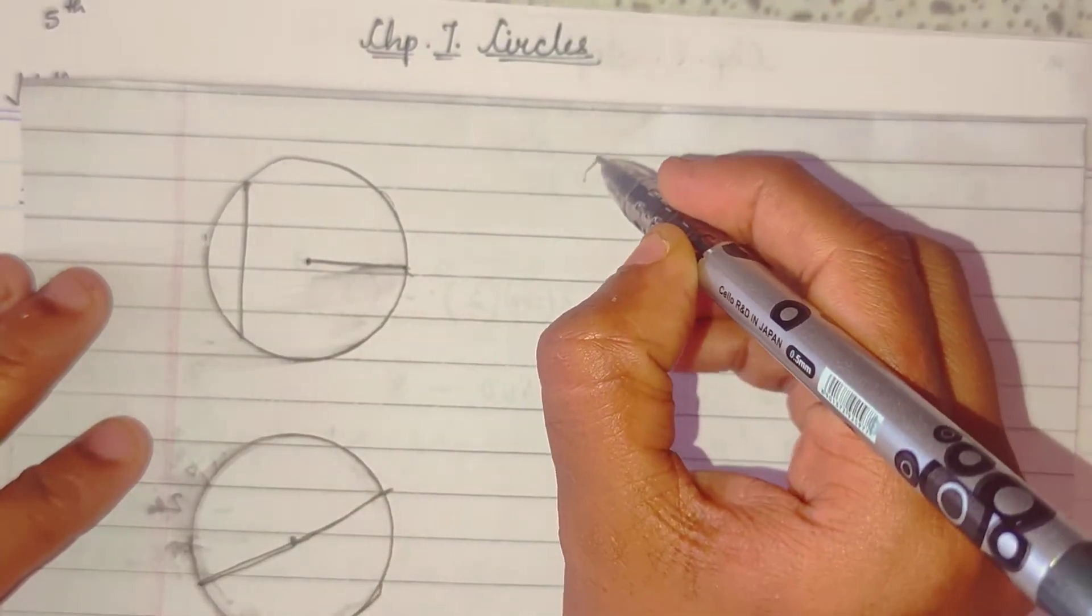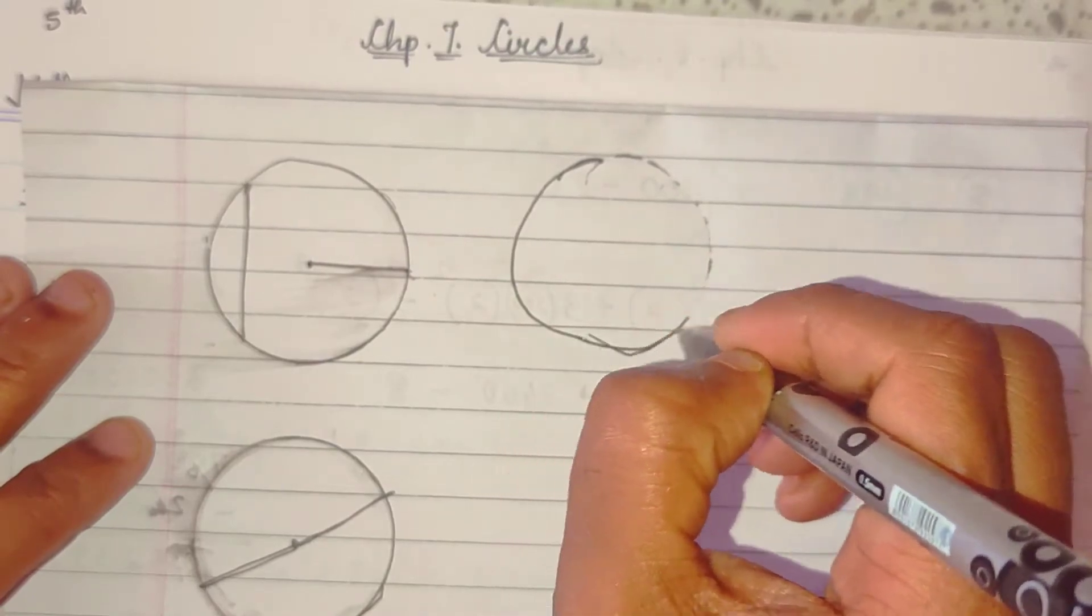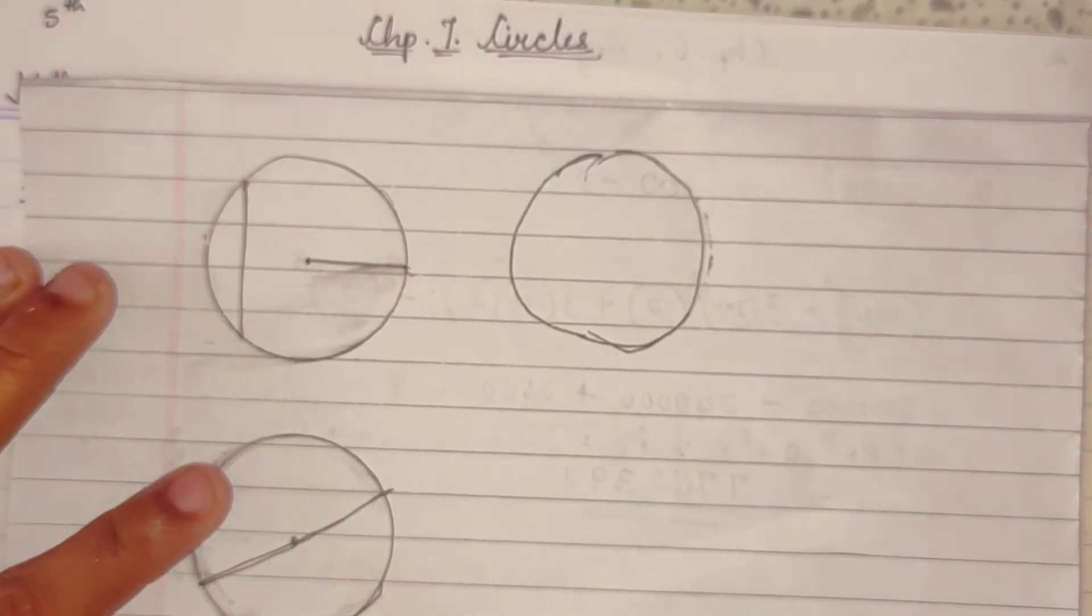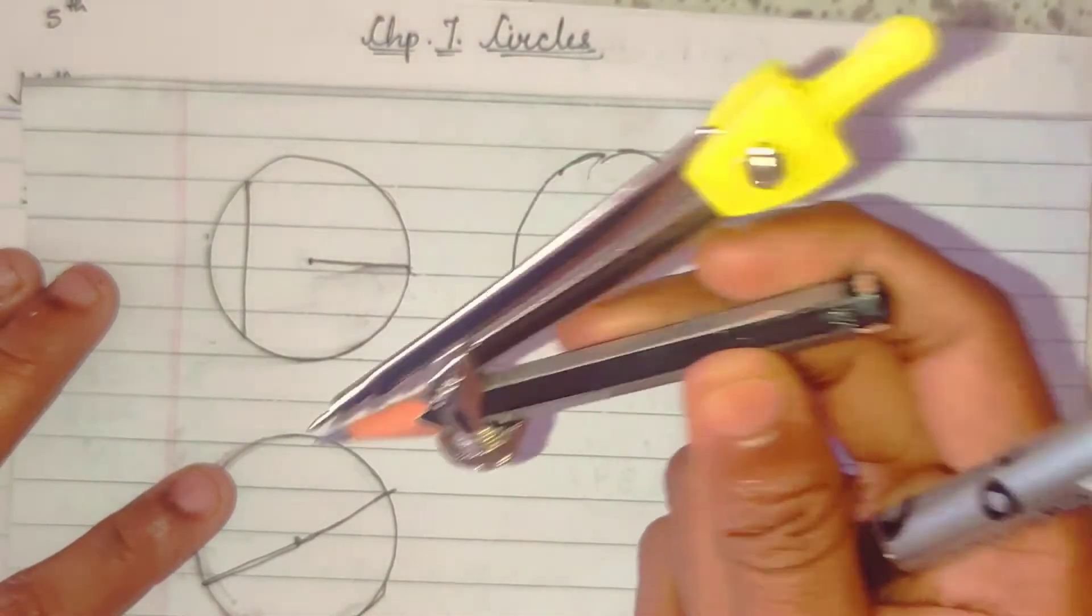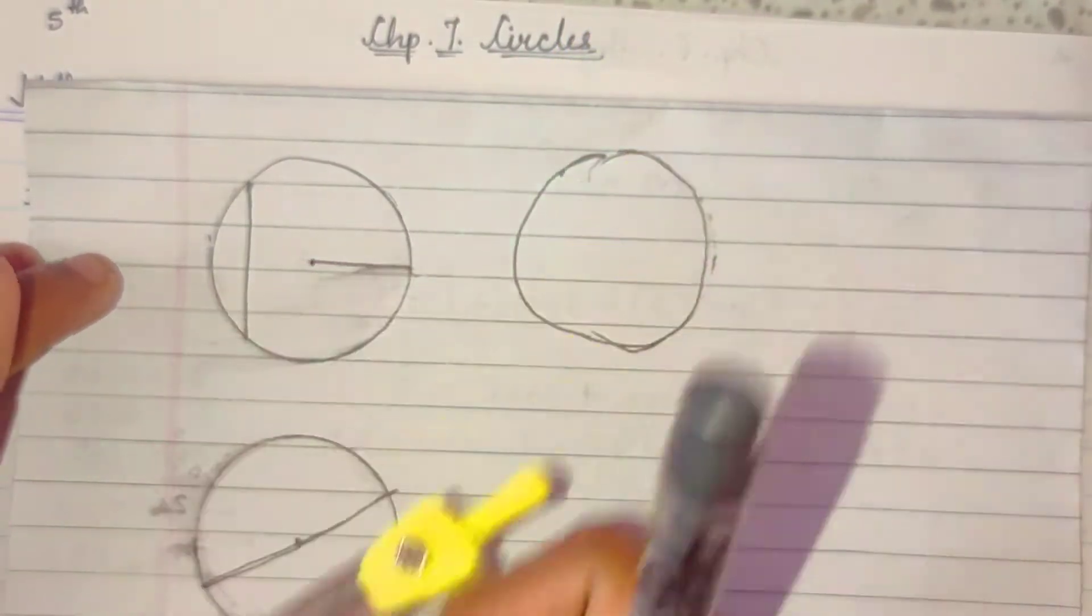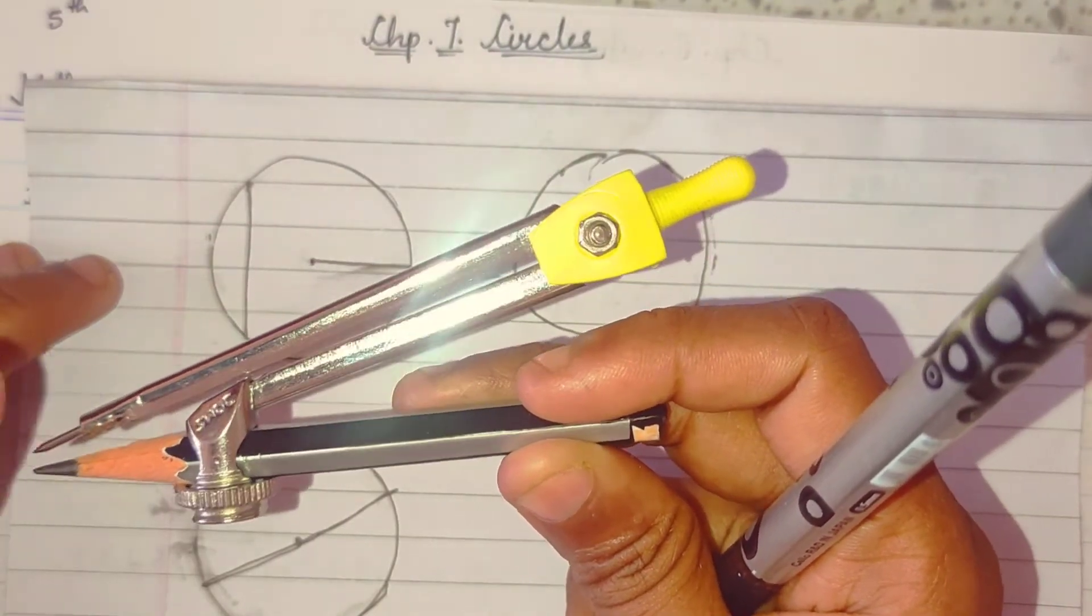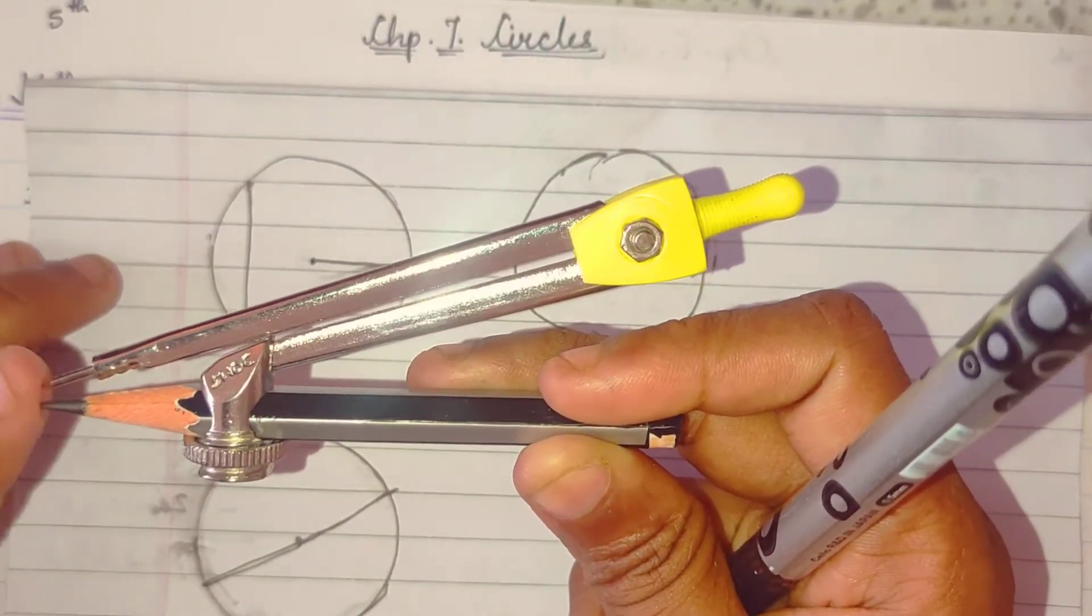Circle kya hai? Jab aap ek measure se, compass mein measure se circle ko banate ho, with the help of this compass. This is said to be a compass. Bacche isko rounder bolte. It is not a rounder, it is wrong name, it is compass.